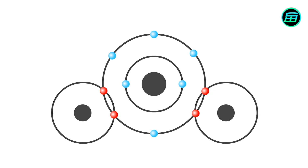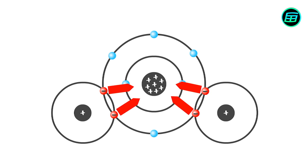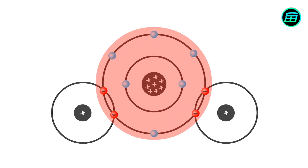But an oxygen atom is bigger than a hydrogen atom and has more protons in its nucleus. So the oxygen atom pulls the shared electrons towards itself with greater force. As a result, the negatively charged shared electrons are closer to the oxygen atom, which gives the oxygen atom a partial negative charge and leaves the hydrogen atoms with partial positive charges.